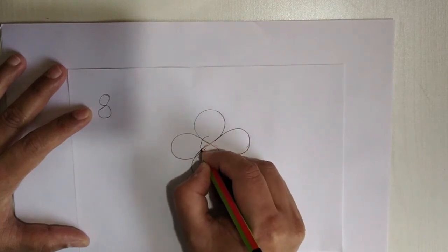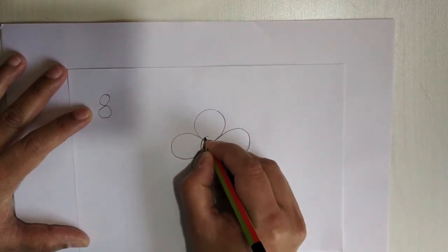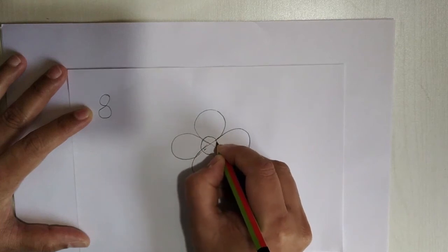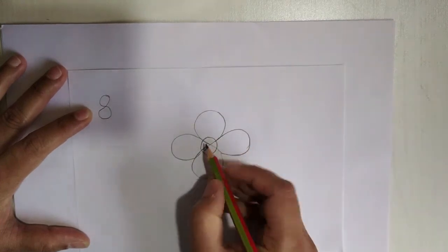Now draw semi circle on both the sides. Now draw a circle in the center. And cover it children, cover it.